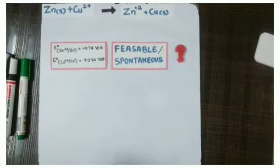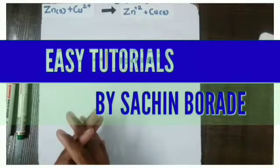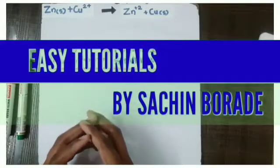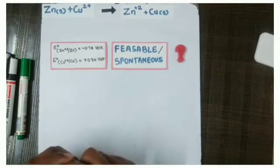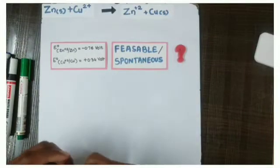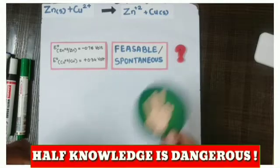So we have given a balanced chemical equation along with their standard reduction and oxidation potential values, and they are asking us whether this reaction is feasible or not. So how to solve this type of reaction? We will solve this type of reaction with the help of two steps.